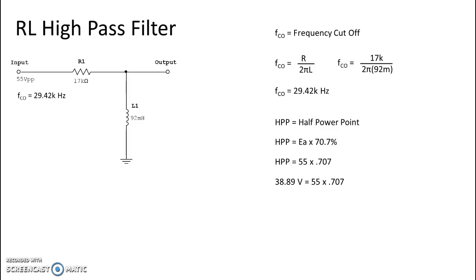That is the start of usable voltage in this particular filter. It is a high pass filter, so the higher the frequency goes, the higher that voltage will go until it reaches a total of 55. The lower that frequency goes, the lower it will get, and once it drops below 38.89 volts we would consider that an ineffective filter because it was below usable voltage.